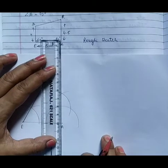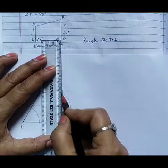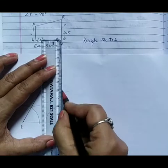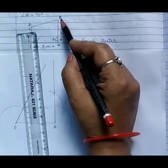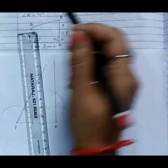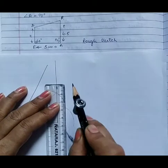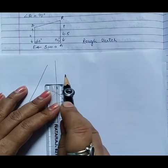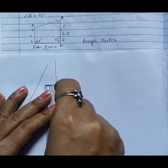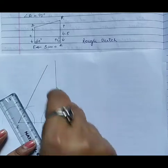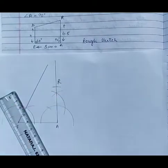This point R is 4.5 cm from A. 4.5 cm. This is 4.5 cm and this point is R.